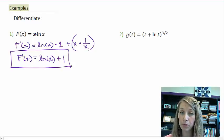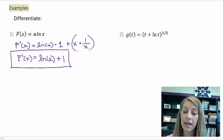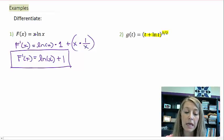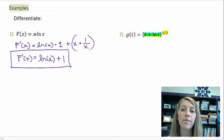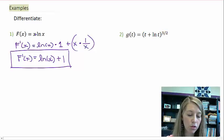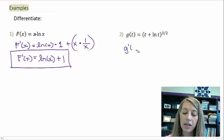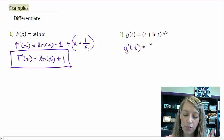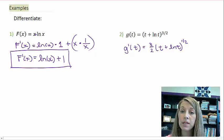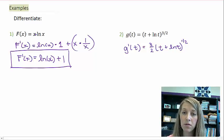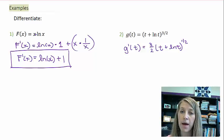Moving over to example 2, hopefully you realize right away that this is a chain rule, because I have an inside and an outside function. I'm going to utilize the chain rule first, and then when I need to take the derivative of the inside, that's when I'm going to apply the derivative of natural log. So my power rule chain rule tells me that g prime of t is equal to 3 halves times t plus natural log of t to the 1 half. That was the derivative of the outside — I brought my power down, kept the inside the same, and subtracted the power from the exponent.